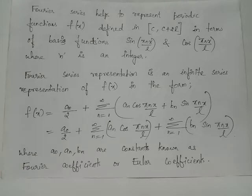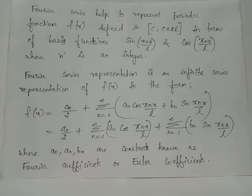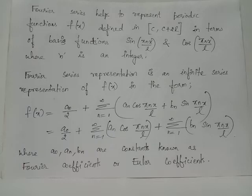Then we can have a Fourier series representation for f(x) in terms of sin(πnx/l) and cos(πnx/l), which are familiar functions, where n belongs to the set of all integers. We have the Fourier series expansion: f(x) equals a₀/2 plus summation from n=1 to infinity of aₙ cos(πnx/l) plus bₙ sin(πnx/l). This is the Fourier series representation of f(x), and a₀, aₙ, and bₙ are known as Fourier coefficients or Euler coefficients.